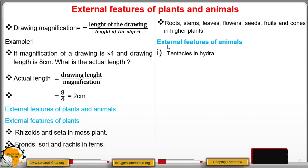Then we have external features of animals. We have what we call tentacles in hydra. We have the feathers and wings in birds, shells of a snail, the sensory organs like eyes, ears, and antennae.